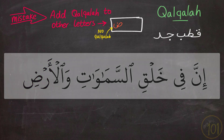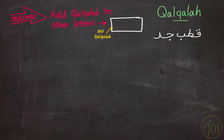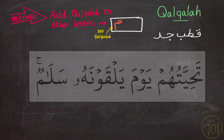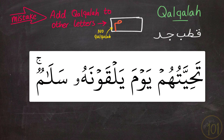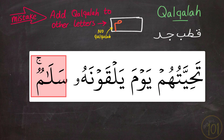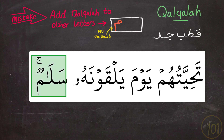The same mistake can happen with words that end with the letter meem: Tahiyyatuhum yawma yalqawna hu salam. Adding qalqala to the meem is wrong. When you end with meem you should just end with the lips closed: Tahiyyatuhum yawma yalqawna hu salam.